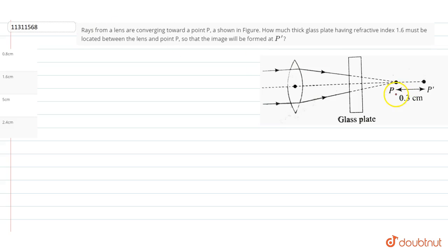First, we have to form the image at P'. P' should be the shift. The lens will cause refraction in the glass plate and the shift should be such that the image will form at P' in place of P.